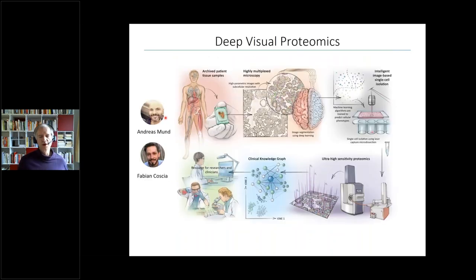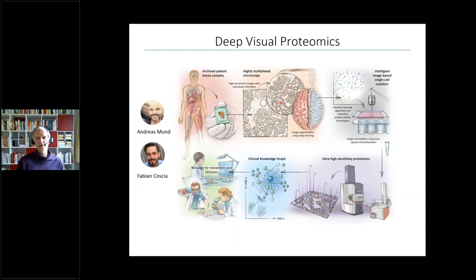Now coming to the tissue level — technology spearheaded in Copenhagen by Andreas Mund and Fabian Koscher. We look at a tissue, which could be FFPE archived material. There are about a billion of these samples worldwide and growing rapidly. We do high-content imaging and use artificial intelligence to segment and classify cells into different classes. In collaboration with Leica, we can use the contours identified by the AI to cut out the cells we're interested in, then go through the proteomics pipeline and clinical knowledge graph to hopefully give recommendations for clinicians or find new things.